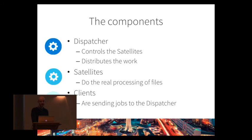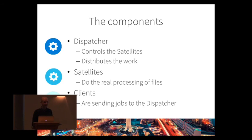The dispatcher controls the satellites. The dispatcher does not do processing itself — it just distributes the work. Work comes from either hot folder processing, where the dispatcher observes hot folders with incoming files, or from CLI calls from remote clients. A client is simply a CLI component with extra parameters telling the processing instance of PDF Toolbox not to process the file locally, but to send it somewhere else. The satellites, located somewhere in the network, do the real processing.